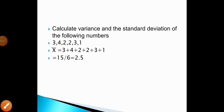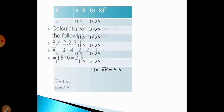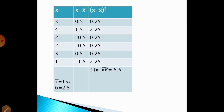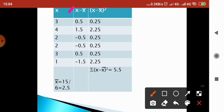Let us see an example. Calculate the variance and standard deviation of the following numbers: 3, 4, 2, 2, 3, 1. The mean x-bar equals 15 divided by 6, giving 2.5, since there are 6 elements. For calculating standard deviation we need x minus x-bar and sigma(x minus x-bar) squared. The mean is 2.5, so 3 minus 2.5 is 0.5, and the square of 0.5 is 0.25.